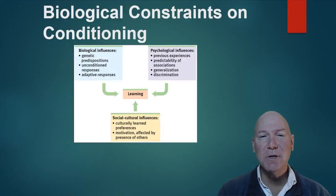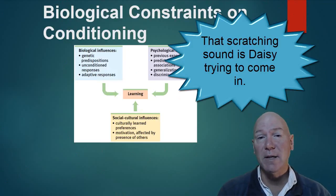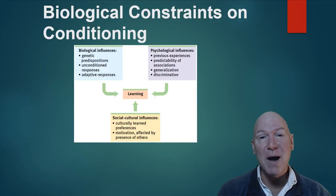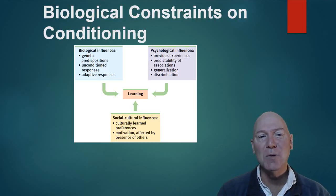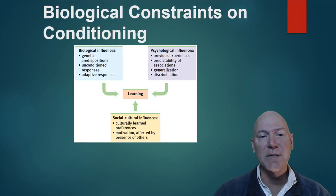Moving on, we've been looking at associative learning with classical conditioning and operant conditioning. With operant conditioning you can do all kinds of things — we've actually trained rats to sniff out mines because they're not heavy enough to trip them but their sense of smell is so good. There are constraints on conditioning and they go along the biopsychosocial, the three levels of analysis.